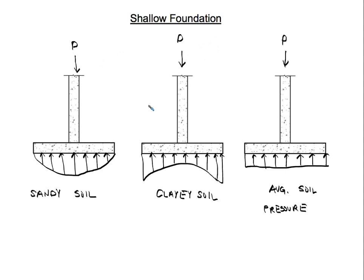Here we have a shallow spread footing with a concentrated axial load going down. The soil pressure distribution underneath the footing depends on what type of material is below it. If there is sandy soil below the footing, you get a parabolic type of distribution. If you have clay soil, you get an opposite distribution — more of a concave, lens-shaped distribution.